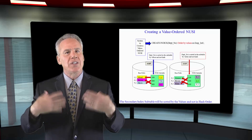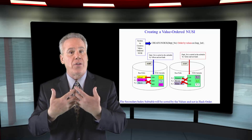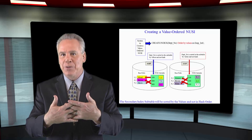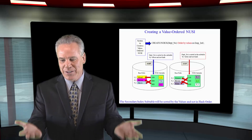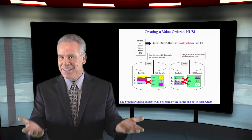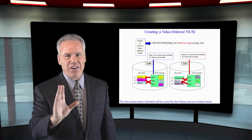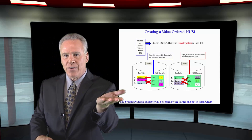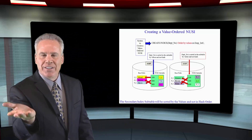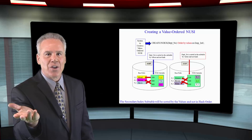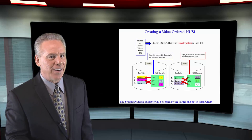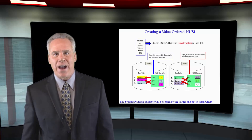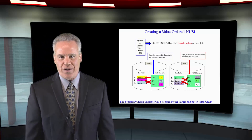When it comes to secondary indexes, you can have up to 32 per table. If you had 32, it would create 32 secondary index subtables — not seen often, but possible. The three types are: a unique secondary index, a non-unique secondary index, or a non-unique secondary index ordered by values, which is called a value ordered NUSI.